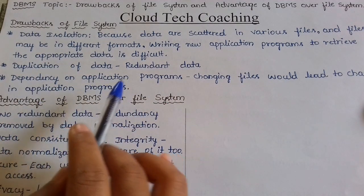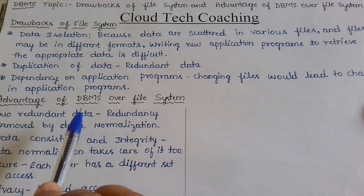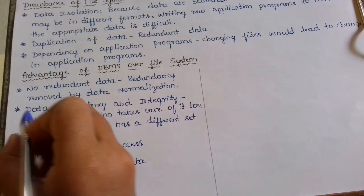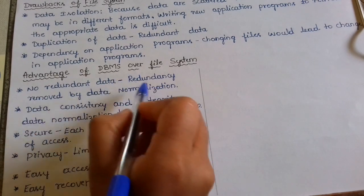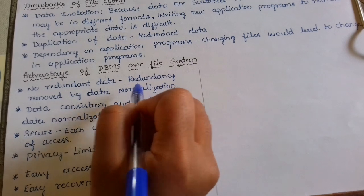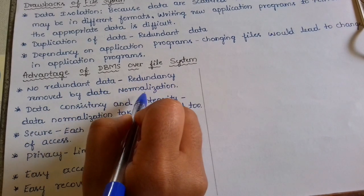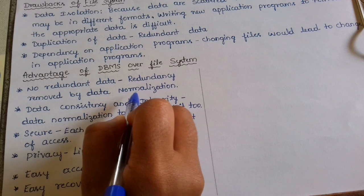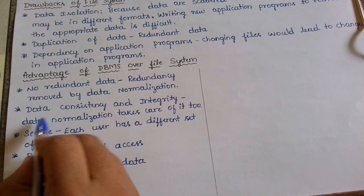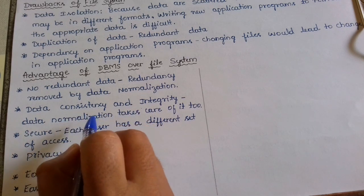Now, moving to the advantages of DBMS over file systems. The first advantage is no redundant data — redundancy is removed by data normalization, meaning repetition of data will be removed. We will look at data normalization in coming classes. Next is data consistency and integrity, meaning data will be consistent with no duplication.